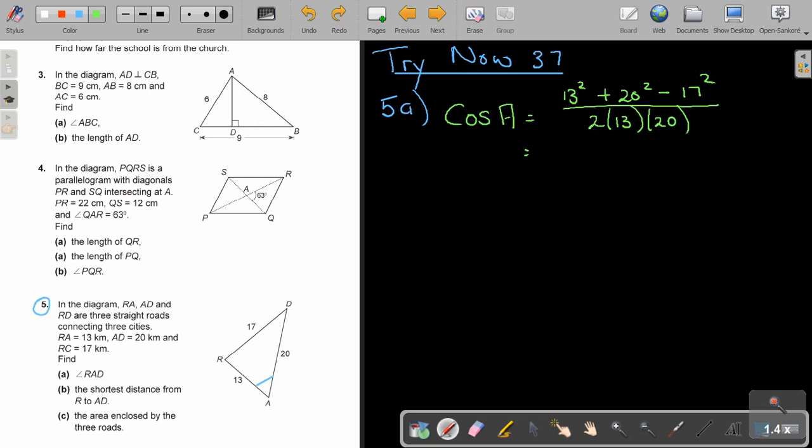And then I'm going to press it on my calculator. We can first write this down: 0.538461538. Remember not to approximate that. And then shift, because you're looking for an angle, cos and that.